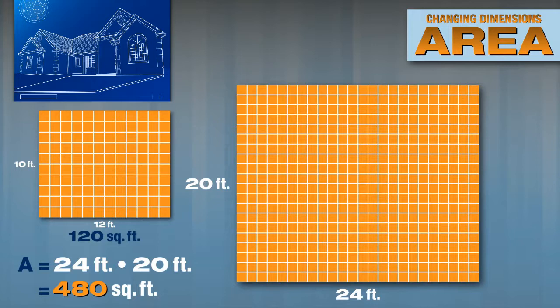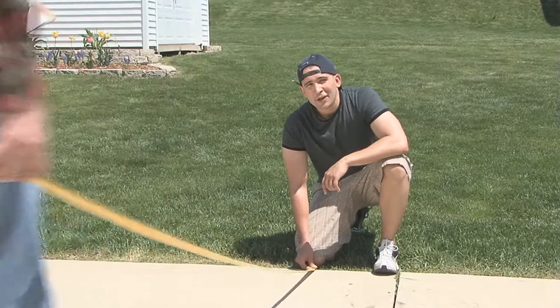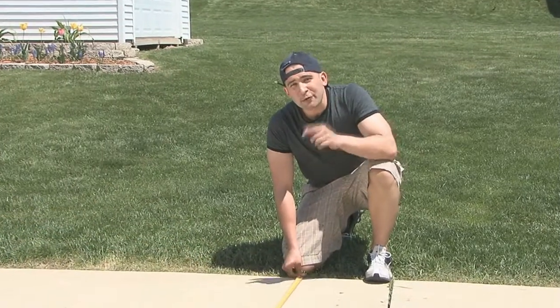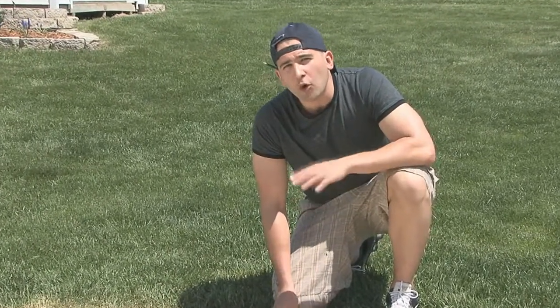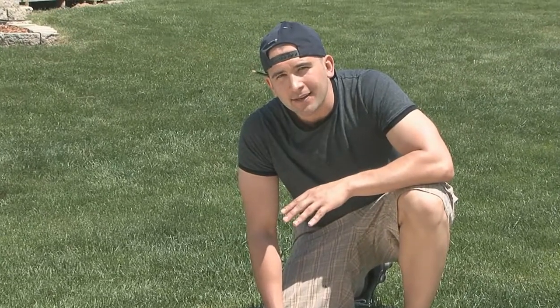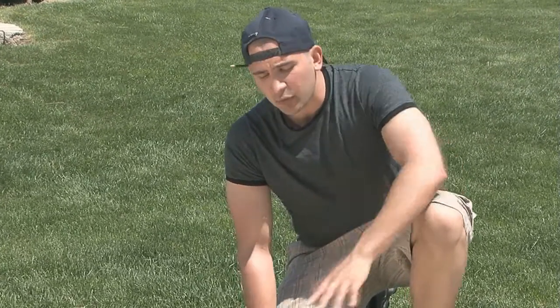Rick's question to me was, how can that be? The owner wants to double the dimensions of the patio, but the new area isn't doubled — it's four times as big. The area of the new patio would be 480 square feet. The good news is that Rick's calculations are correct. What he needs to understand is that when the linear dimensions of a shape double, the area quadruples. That's why the area of the new patio is four times the original area.